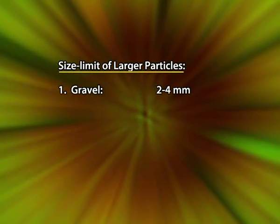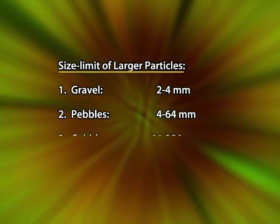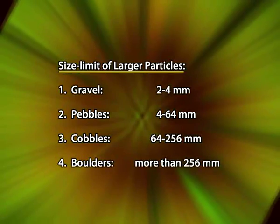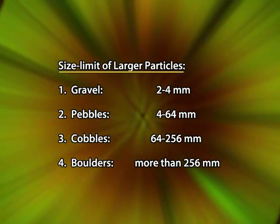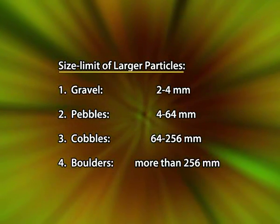Larger particles with more than 2 mm diameter are not included in soil textural determination. The size limit of these larger particles includes gravel between 2 to 4 mm, pebbles having a diameter of 4 to 64 mm, cobbles with 64 to 256 mm, and boulders having a diameter of more than 256 mm.